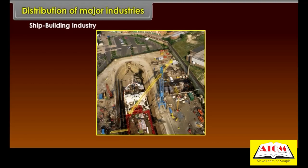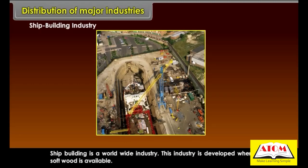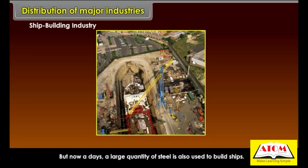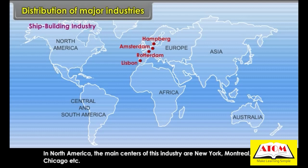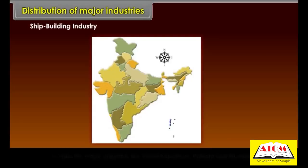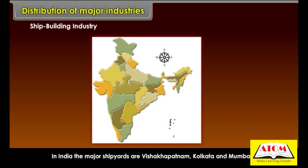Shipbuilding is a worldwide industry developed where softwood is available, though nowadays large quantities of steel are also used. In Europe, major shipyards are in Rotterdam, Amsterdam, Antwerp, Hamburg, and Lisbon. In North America, main centres are New York, Montreal, and Chicago. In India, the major shipyards are Vishakhapatnam, Kolkata, and Mumbai.